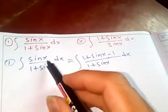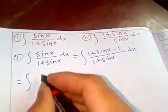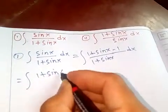Now just separate them: (1 + sin(x)) over (1 + sin(x)) dx minus integral of 1 over (1 + sin(x)) dx.